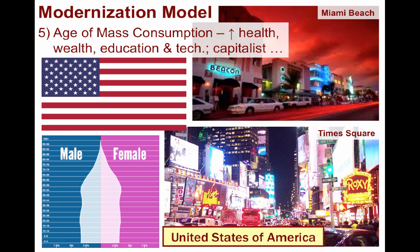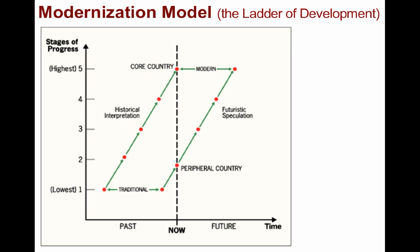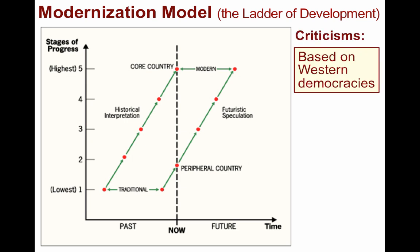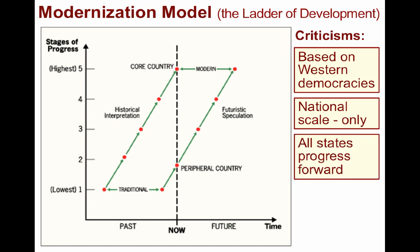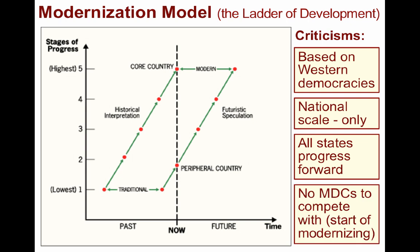Since no theory is perfect, problems do arise with the modernization model. Rostow based his ideas on Western democracies of the mid-20th century, and it is unlikely that all countries will follow the same path toward development. For instance, since MDCs have relatively low population growth rates, markets for low-cost manufacturing grow slower now than in the past. Rostow's focus was predominantly at the national scale and didn't fully investigate international competition. His model also contends that countries always progress forward, whereas it is possible for states to fall backward, as is largely the case with Russia since its devolution from the Soviet Union in the 1990s. Furthermore, there were no MDCs by today's measurement when industrialization first began, and these states often set trade agreements in their favor. Most LDCs and NICs are still dependent on MDCs to use and consume their goods.